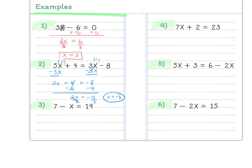Next: 7 minus x equals 19. Subtract 7 from both sides to get minus x equals 12. We need to know what x is, not minus x. Multiply or divide both sides by negative 1 to get x equals negative 12. Eventually, when the variable is negative, you can just switch the sign of what's on the other side without doing the full division.